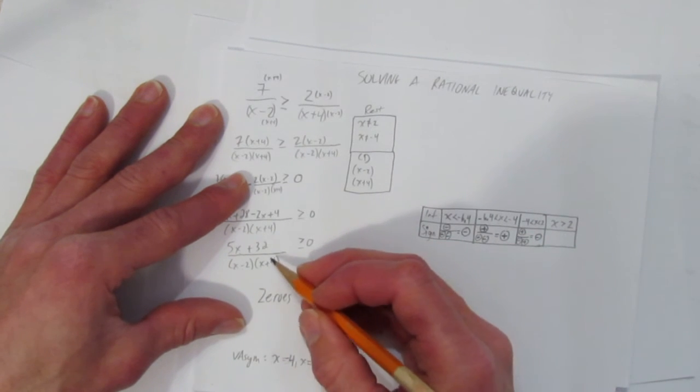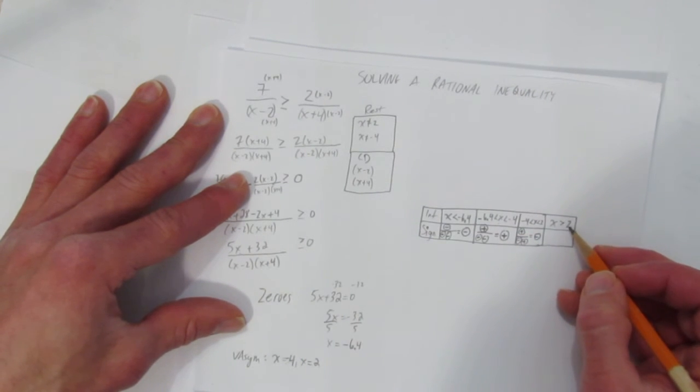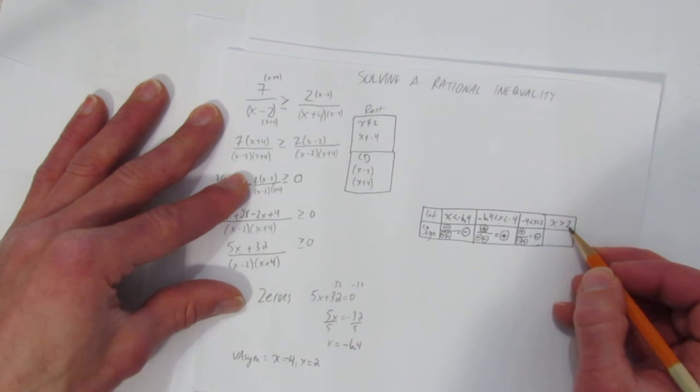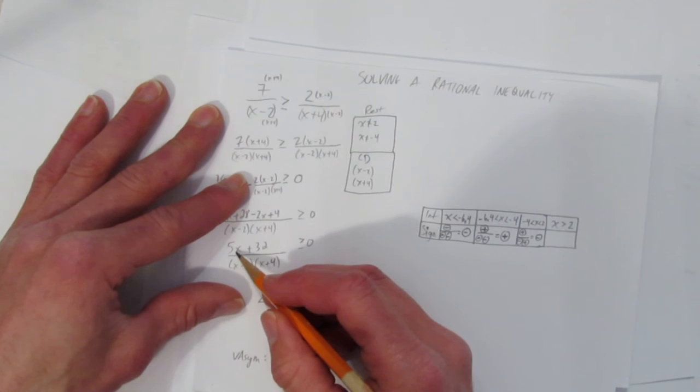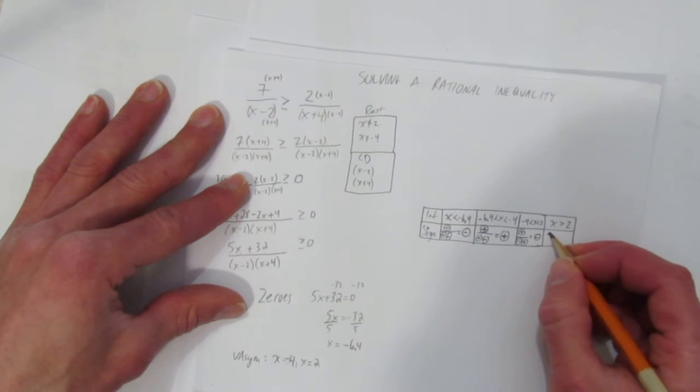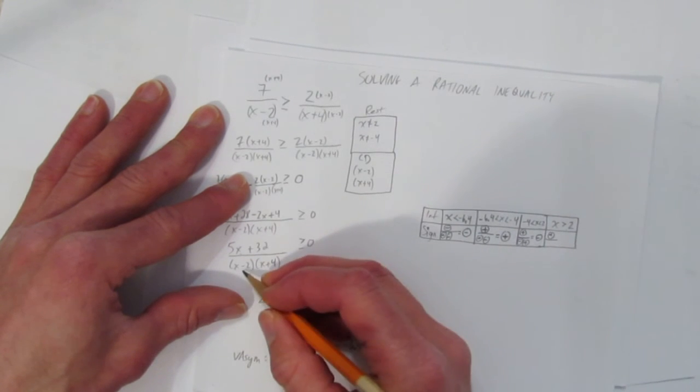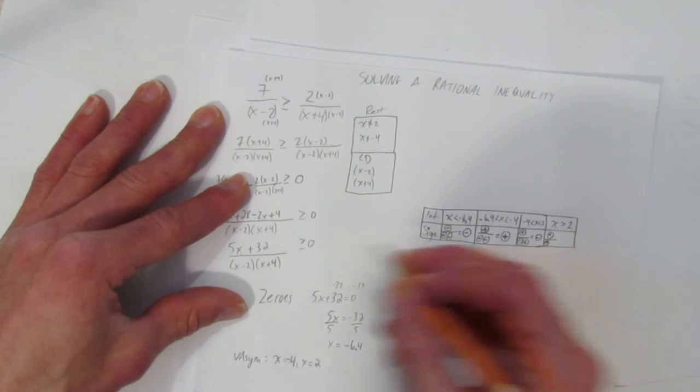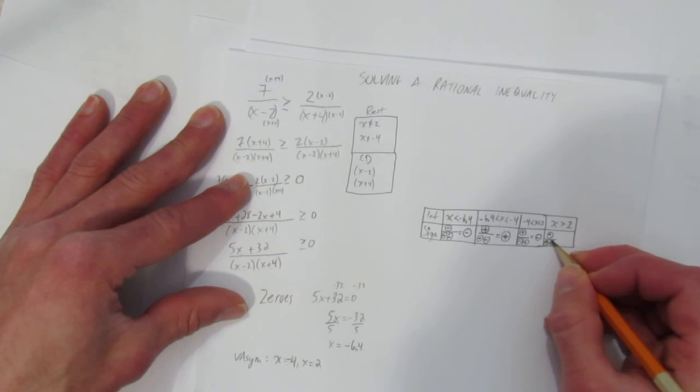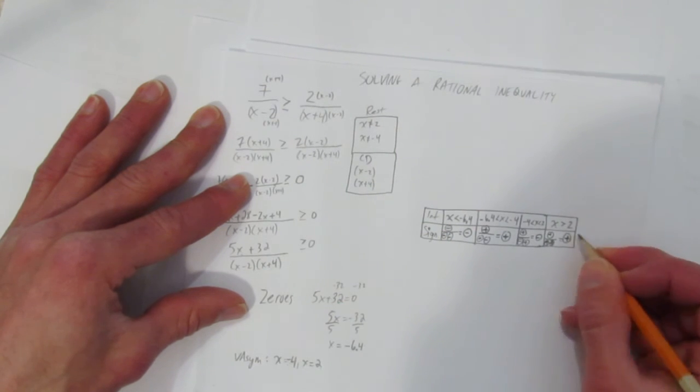And then finally, sub in something bigger than 2, anything, you can sub in a billion, but why would you? Sub in something bigger than 2, like 10 or 100. Let's sub in 100. 100 up here would make this positive, over 100 in here would make this positive, 100 in here positive. Oh, you would get plus, plus, plus, that just makes positive. Why all that?